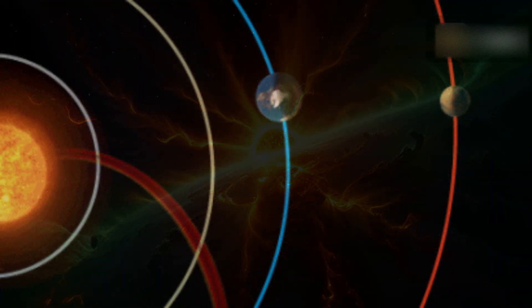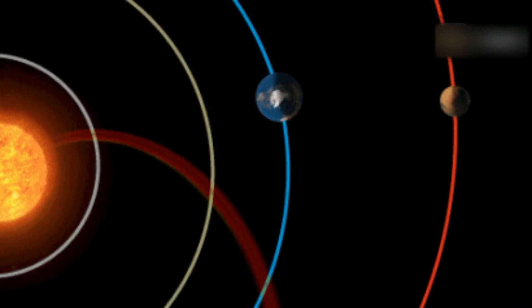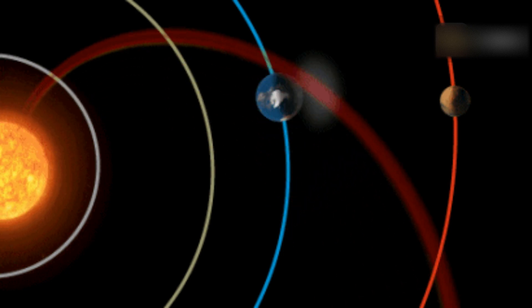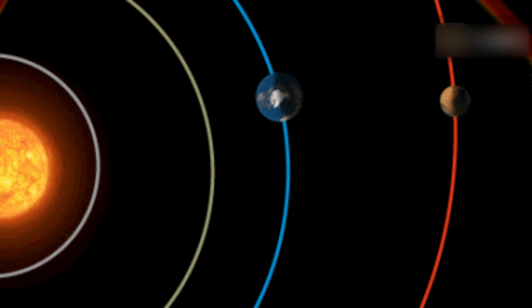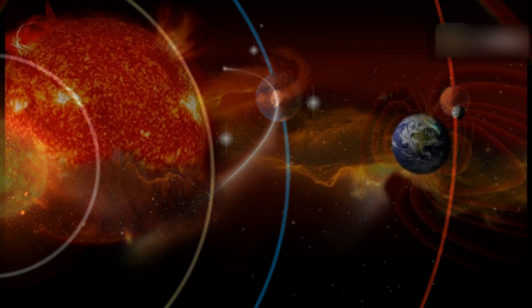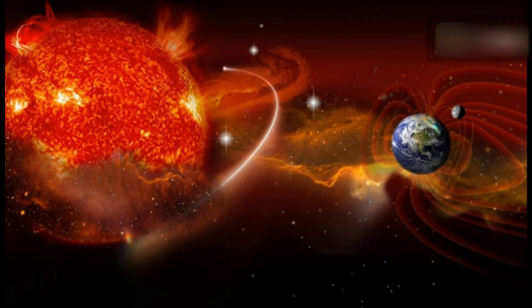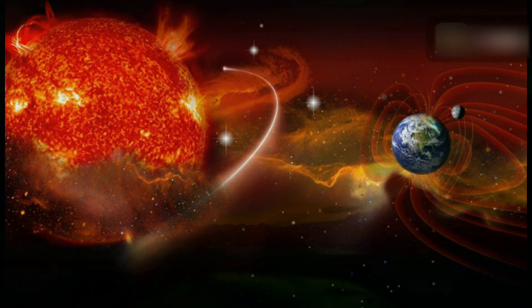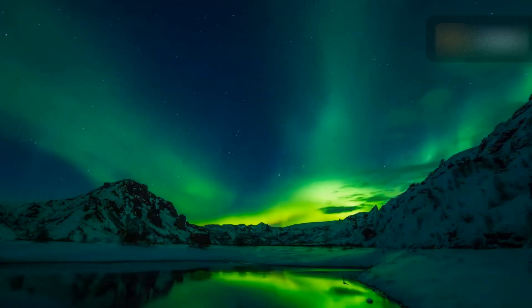This event will compress Earth's magnetic field as fast and slow solar wind streams interact. Expect a noticeable increase in solar wind speed, density, and magnetic field strength, potentially leading to minor G1-class geomagnetic storms and auroras at high latitudes if the magnetic field's BZ component turns southward.